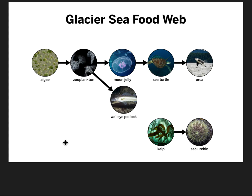Remember, when we look at our glacier sea food web, we're focusing on these moon jellies. One claim was that the zooplankton increased, and that caused the population of moon jellies to increase. The other is that the sea turtle population increased, and that caused the moon jellies to increase.